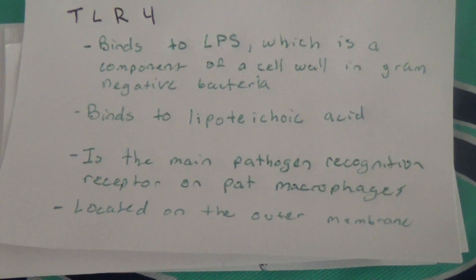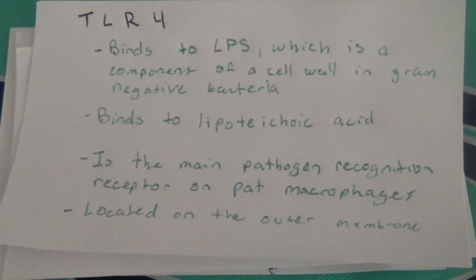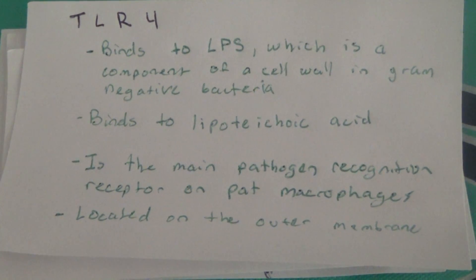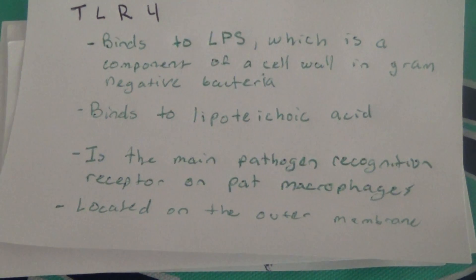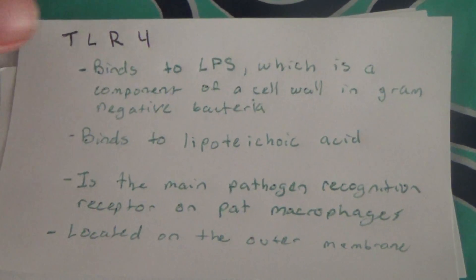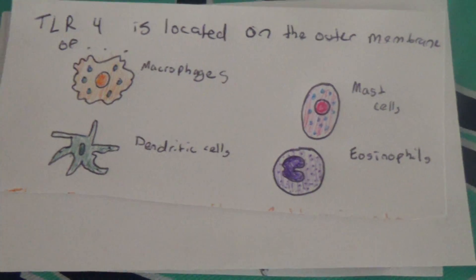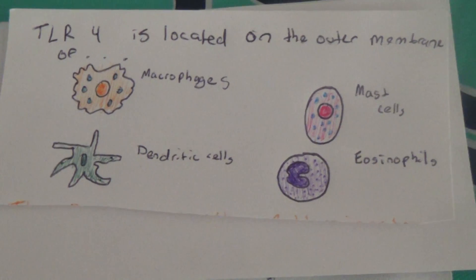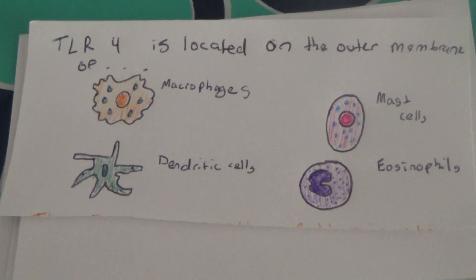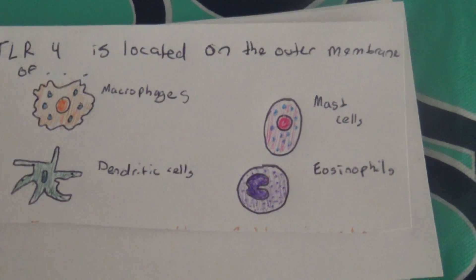It is the main pathogen recognition receptor on macrophages, and it's located on the outer membrane of these four immune cells: macrophages, mast cells, dendritic cells, and eosinophils.